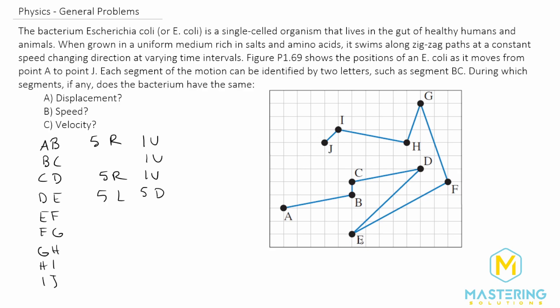Okay so now for EF it goes seven to the right and it goes four up.